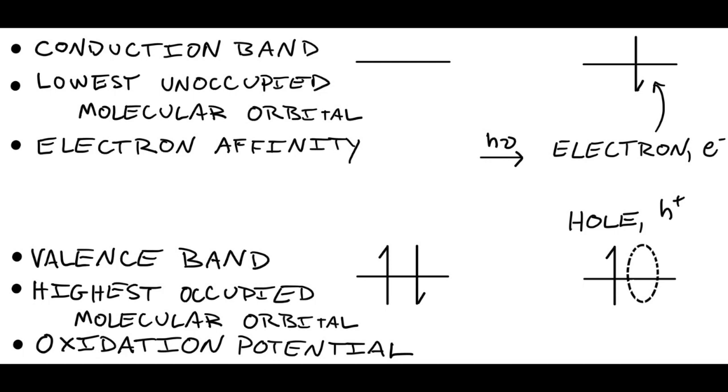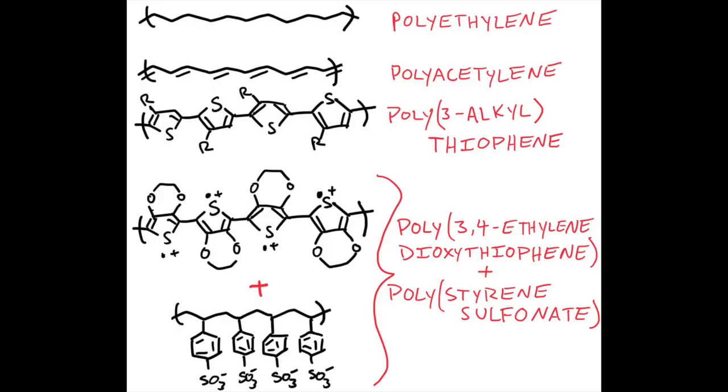Now, what does a semiconducting polymer look like? What is the characteristic feature? The characteristic feature is a lot of unsaturation, which means that there are a lot of double bonds and sometimes triple bonds in the backbone. The characteristic motif of a semiconducting polymer is this alternating arrangement of single and double bonds like polyacetylene.